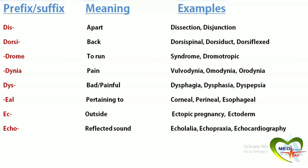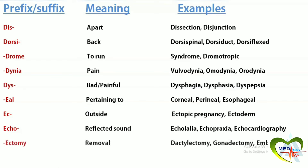Ectomy means removal. Dactylectomy is the amputation of fingers. Gonadectomy is the removal of testes in males and ovaries in females. Embolectomy is the removal of an embolus.